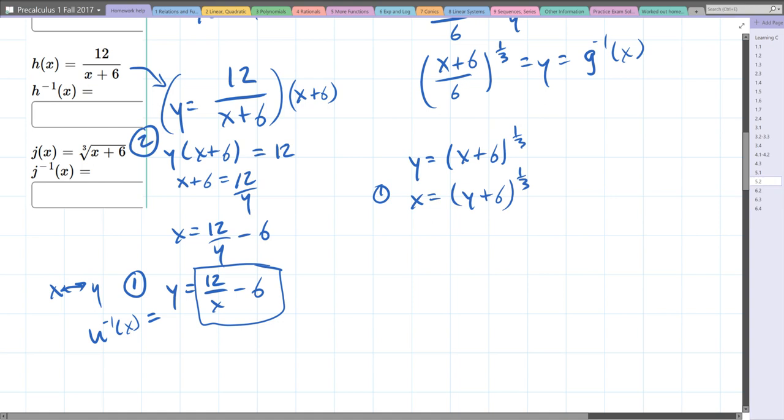Now step two: solve for y. To eliminate the one-third power, we'll cube both sides. That cancels the third power on the right. Then subtract 6 equals y. This is j inverse of x.